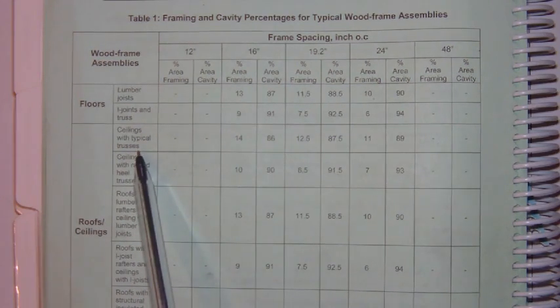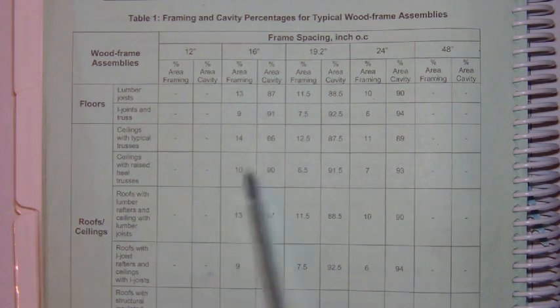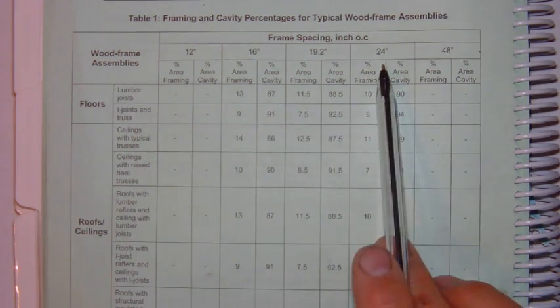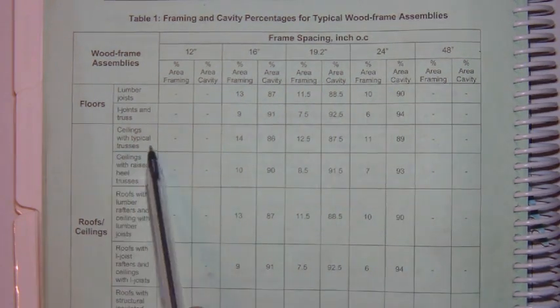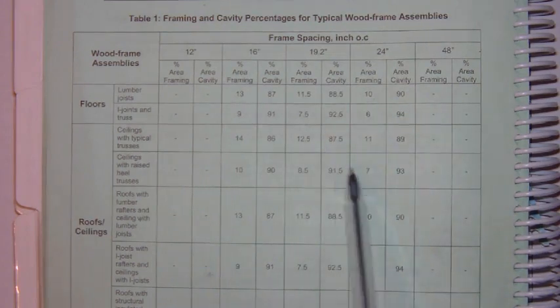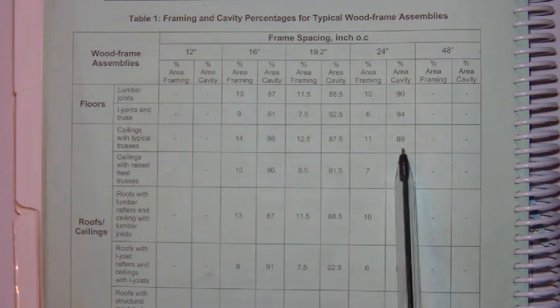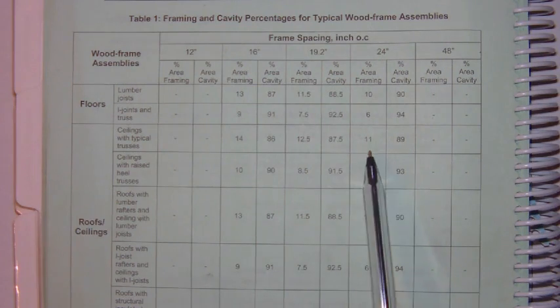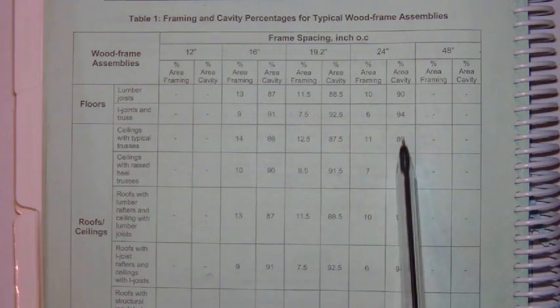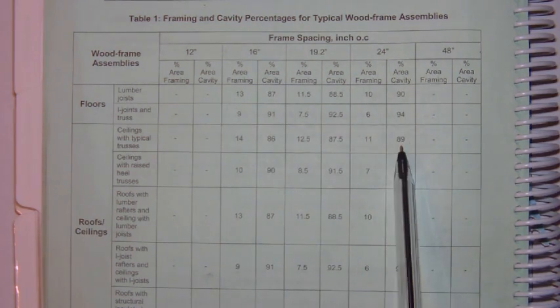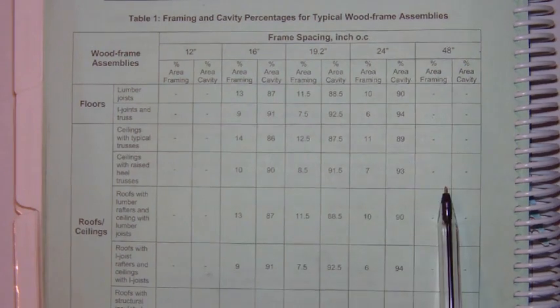We know that the trusses are spaced at 24 inches on center. So we're going to be in this row, and that means that our values can be pulled right from the table. So the percent framing is 11, and the percent of the cavity, or the insulation, is 89%.